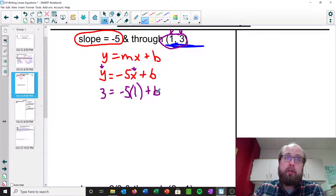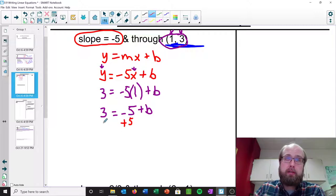And then we just want to solve for b, because remember, we need to find that y-intercept. And so we'd have 3 equals negative 5 times 1 is negative 5 plus b. We'll go ahead and add 5 to both sides. And we get b equals 8.